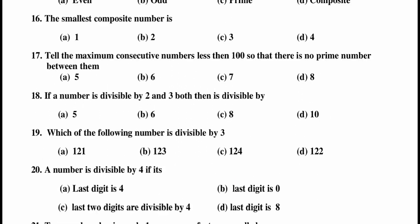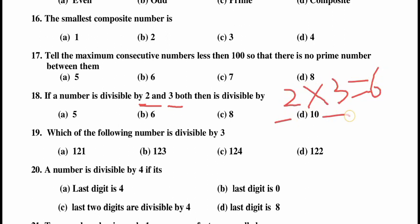Question number 18: if a number is divisible by both 2 and 3, then it is divisible by — 5, 6, 8, or 10? The divisibility rule of 6 states that if a number is divisible by both 2 and 3, then it is also divisible by 6, because 2 times 3 is 6. So the answer is 6.